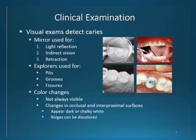I have my cursor laying over one of these areas — notice the change in the whiteness of this tooth that has quite a bit of decay in it. This arrow is also illustrating this whitened area and then the darkening on the proximal surface.